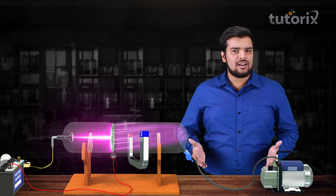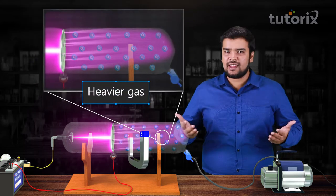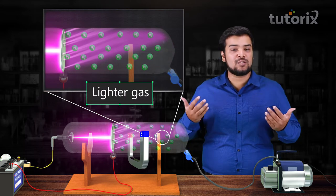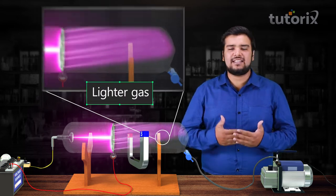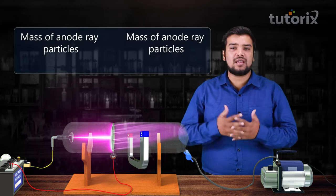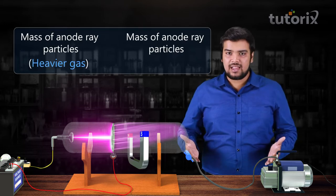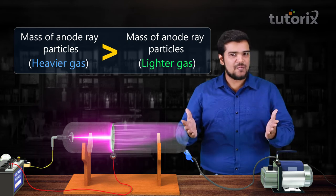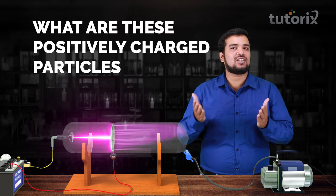They saw that deflection in the case of heavier gas was less and deflection in the case of lighter gas was more. This clearly tells us that the particles coming from the heavier gas had more mass and the particles coming from the lighter gas had less mass. So now can you guess what are these positively charged particles?